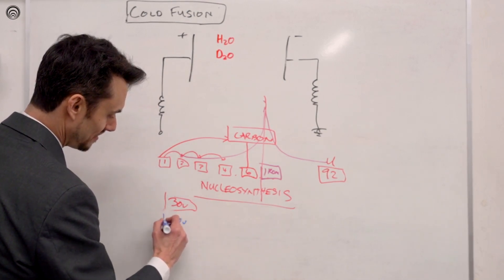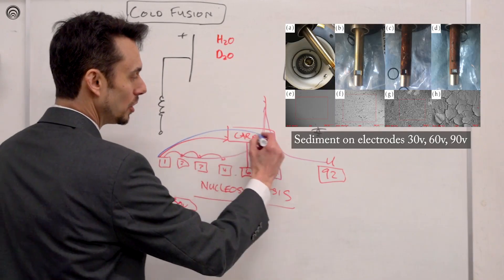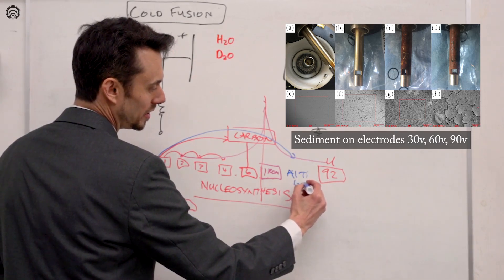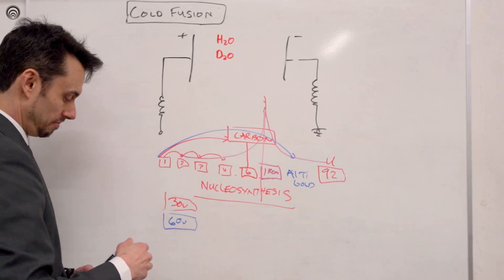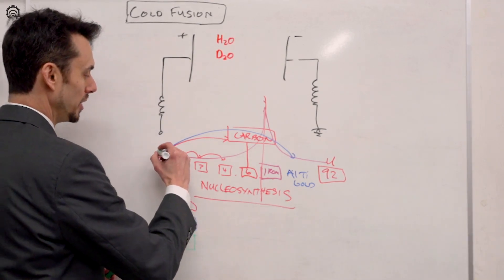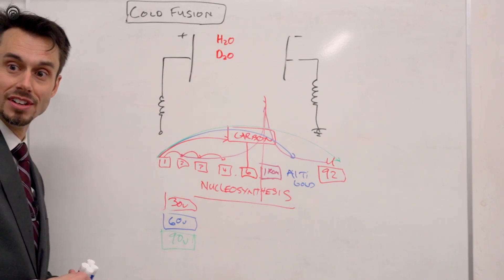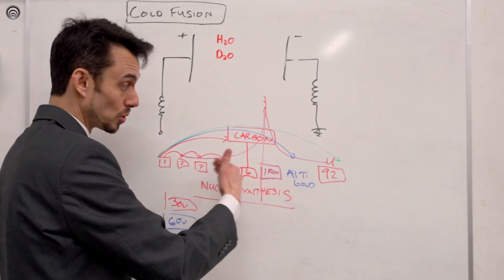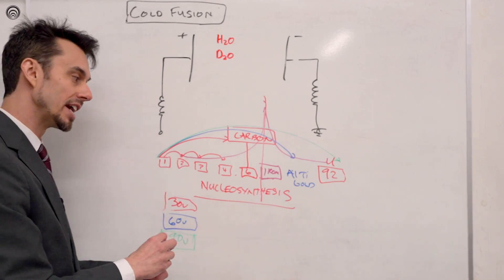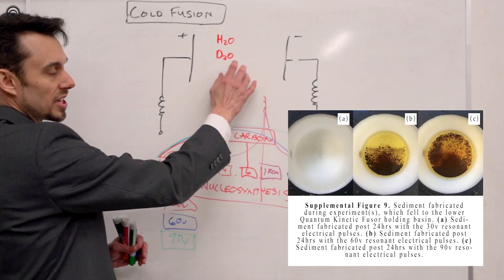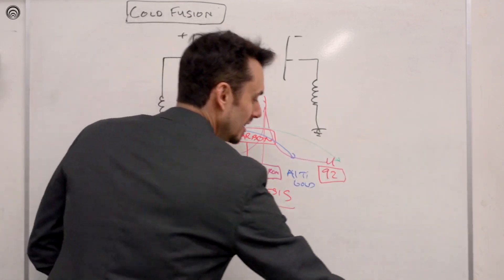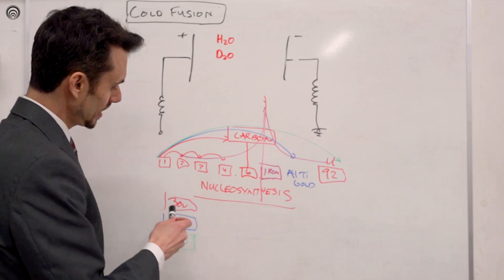If we do 60 volts, we can go further to iron, aluminum, titanium, and gold. At 90 volts input, we can go all the way up to uranium. It's actually an exponential process — the more sedimentation builds up, the more it wants to keep building, like a micro planet forming.